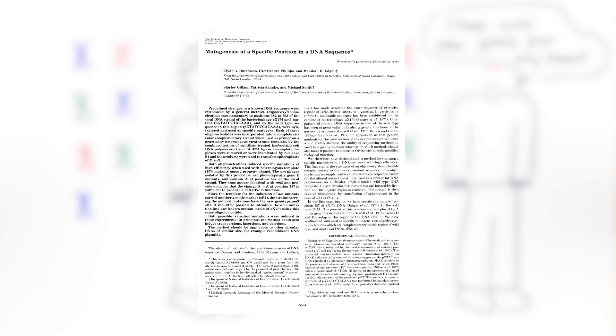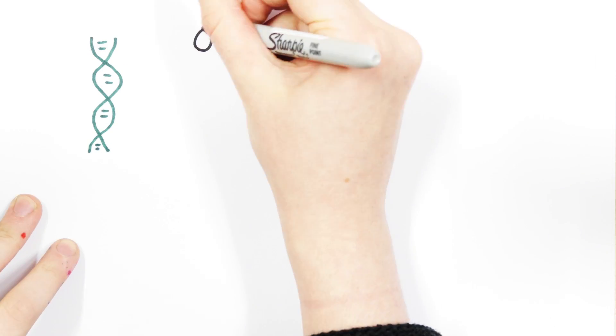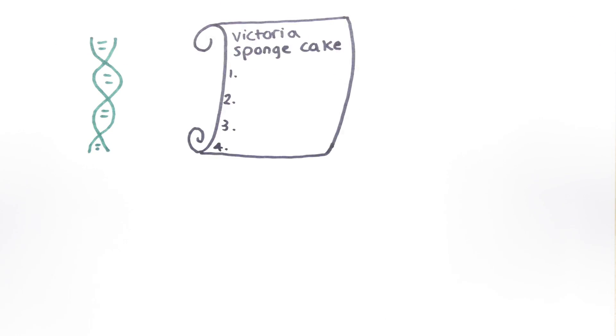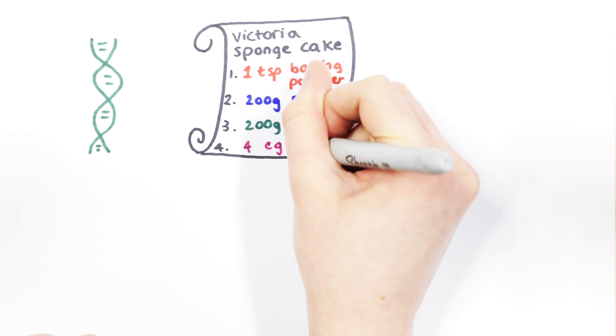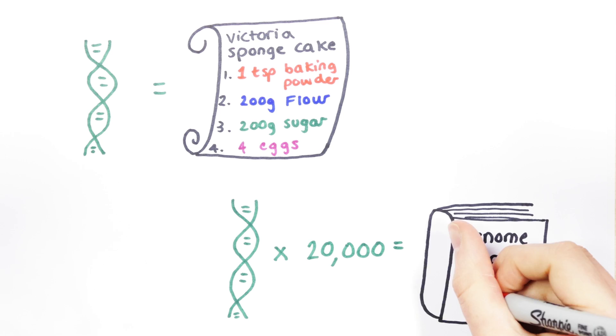And to understand this we need to do a quick crash course in genes. A gene is just a length of DNA that contains the instructions to build something in the cell that is functional. So in a way a gene is like a recipe and your whole genome is a cookbook made up of over 20,000 recipes.